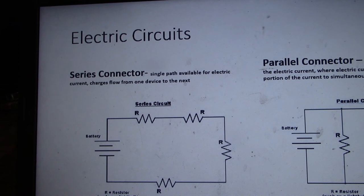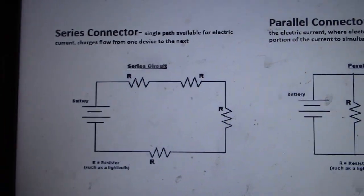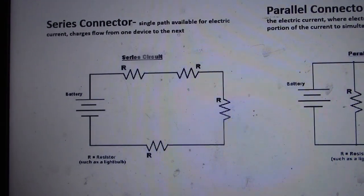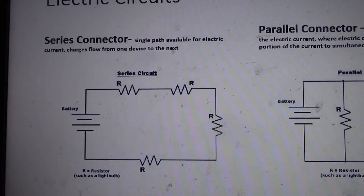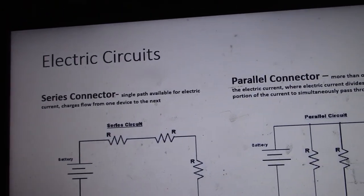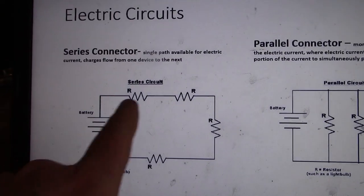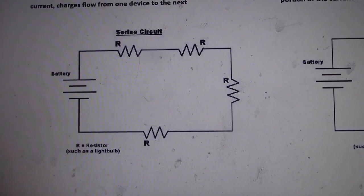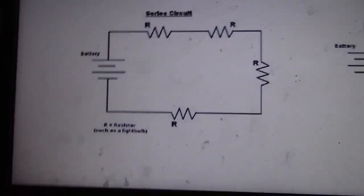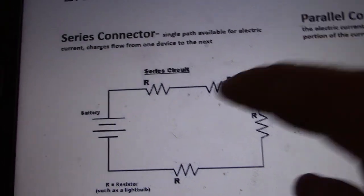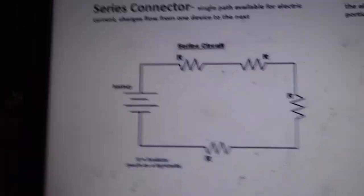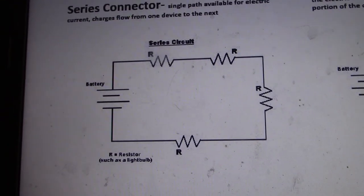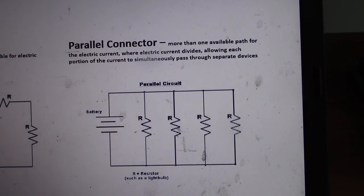A series circuit has a single pathway for flow. Charges flow from one device to the next and voltage decreases as you move through each resistor. If you turn off one resistor, current stops — like Christmas lights: remove one bulb and the whole string goes out because there's only one pathway for flow.